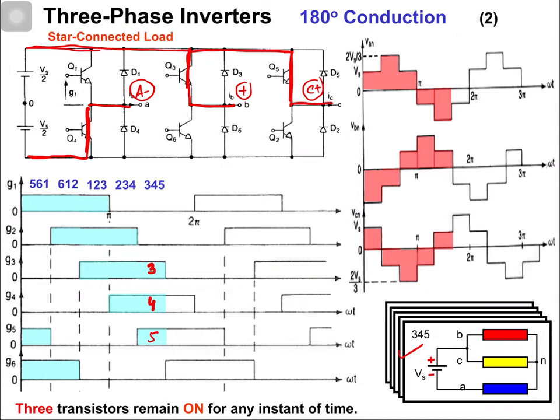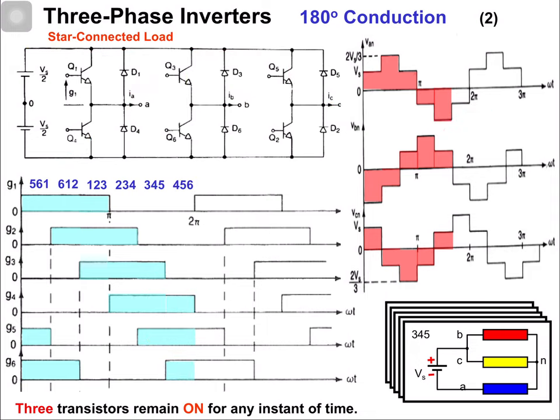Phase B and C are connected at one point, so their voltages are equal: vbn = vcn = (1/3)Vs, and van = -(2/3)Vs.